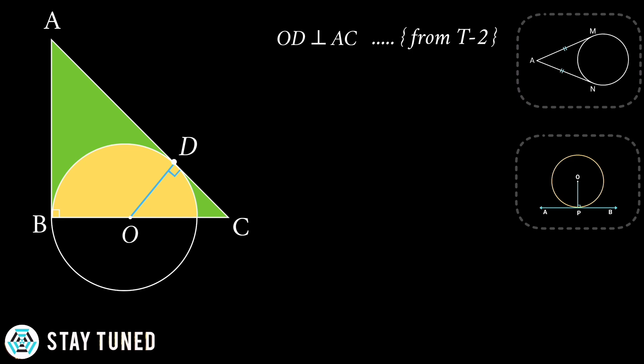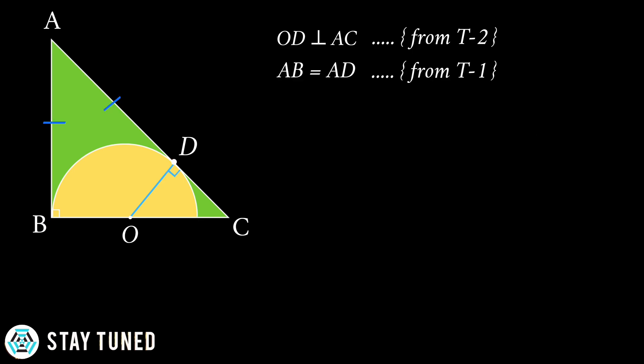Further on, by the principle of equal tangents stated in the first theorem, AB will be equal to AD. Next, we would put back the side's measures.